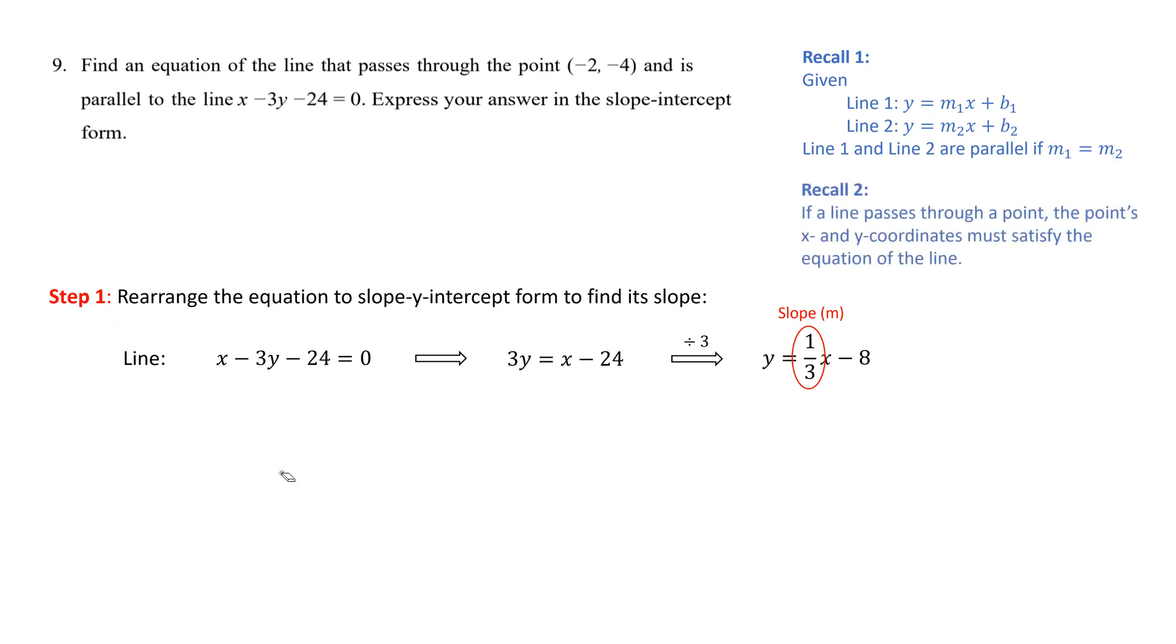Now recall that if a line passes through a point, the point's x and y coordinates must satisfy the equation of the line. So next, we substitute the slope of one-third, x-coordinate of negative 2, and y-coordinate of negative 4 into the equation y equals mx plus b, and solve for b.